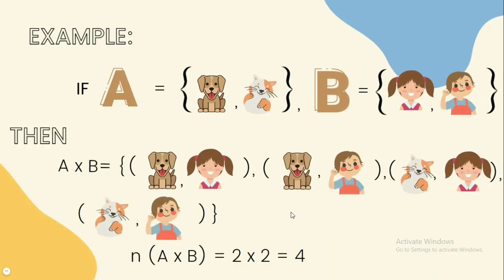Last example we have. Let us try it this time, but with different elements. In set A, we have a dog and a cat. And in set B, we have a girl and a boy.